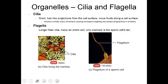Cilia are usually seen in our upper respiratory tract. Here's a scanning electron micrograph of cilia lining the trachea, the tube that takes air into our lungs. These cilia are short hair-like structures that beat outwards, keeping debris, dust particles, and foreign materials from going into our lungs. Flagella are locomotory organelles that move an entire cell. In human beings, the only example of a cell with flagella is the sperm cell. The flagella helps the sperm swim and fertilize the egg as it comes down the fallopian tube.